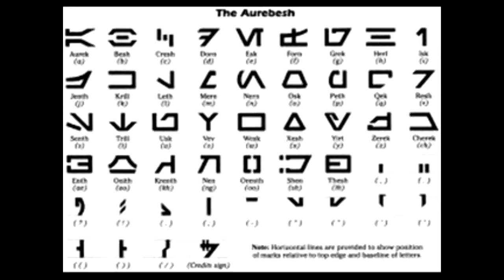Which is going to be the entire image of this episode. Which is: Aurek, A. Besh, B. Kresh, C. Dorn, D — which kinda looks like a Galactic Republic Standard Credit mark. Esk, E — which looks like a 4.